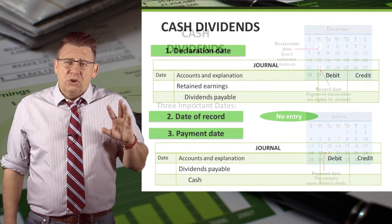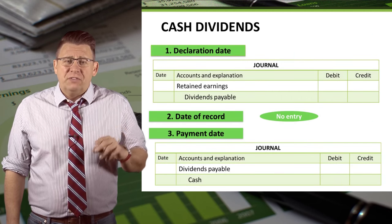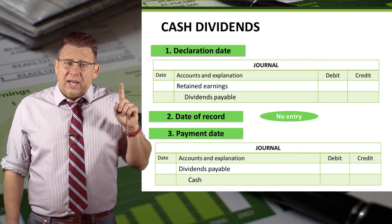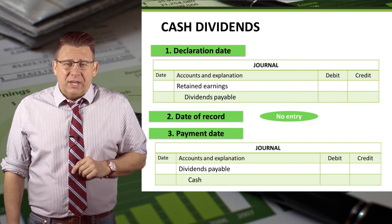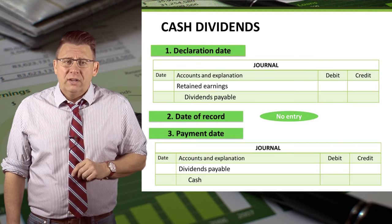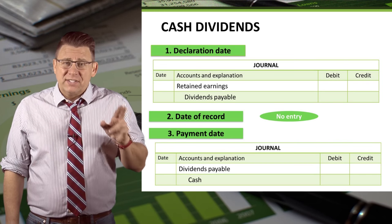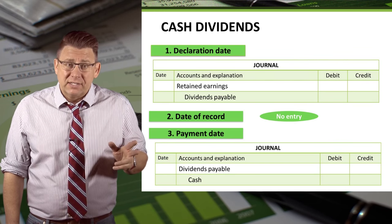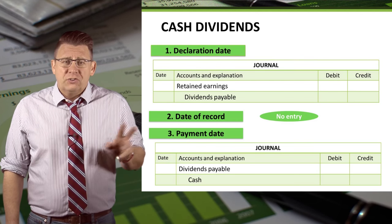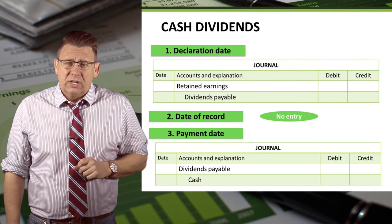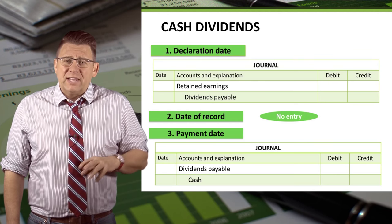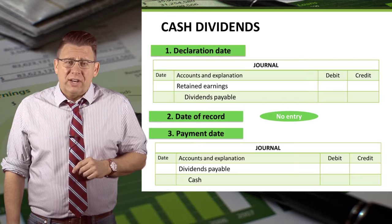This slide shows the journal entries made on each of these important dates. The date of declaration results in retained earnings being debited and dividends payable being credited. You can see why this is the day a liability exists because the liability account is used in this journal entry. There is no journal entry for the date of record. Finally, the date of payment is a debit to dividends payable and a credit to cash.